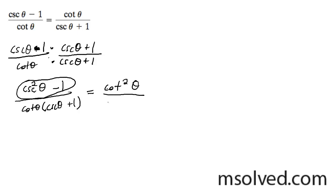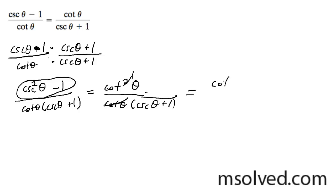We've got cotangent on the bottom and cosecant theta plus 1. One of these cancels out — that cancels that out — and we end up with what we're looking for: cotangent theta over cosecant theta plus 1.